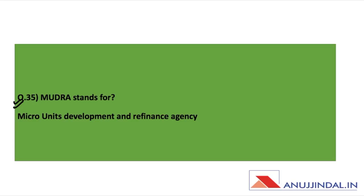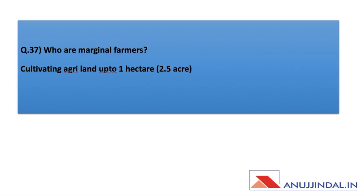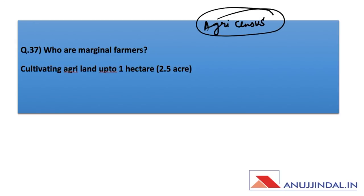According to the APEDA report, which commodity has seen the maximum export in terms of volume? The answer could be non-basmati rice, but it is doubtful. If you have the options, do mention them. Who are marginal farmers? From the Agri Census, the five land holding categories show that cultivating agricultural land up to one hectare or below one hectare is considered marginal farmers.